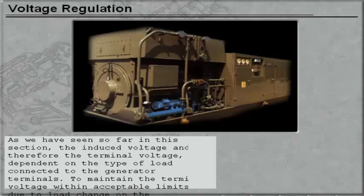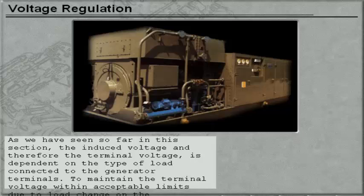As we have seen so far in this section, the induced voltage and therefore the terminal voltage is dependent on the type of load connected to the generator terminals. To maintain the terminal voltage within acceptable limits due to load changes on the generator, we need to vary the strength of the main field.